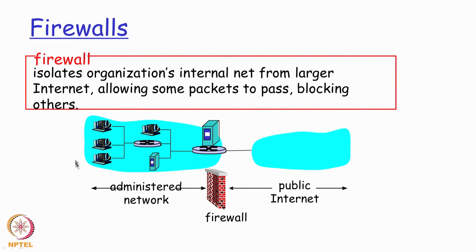If we have this part of the network connected internally as part of our own organization network topology, and a public internet through an ISP to which we are connected, we might have a router device where the public internet terminates and also where the intranet terminates. We will typically have a firewall device just before this router device, or as part of this router device itself, depending on the size of the network. This firewall device is going to act as an interface or bridge between the administered local intranet and the public internet.